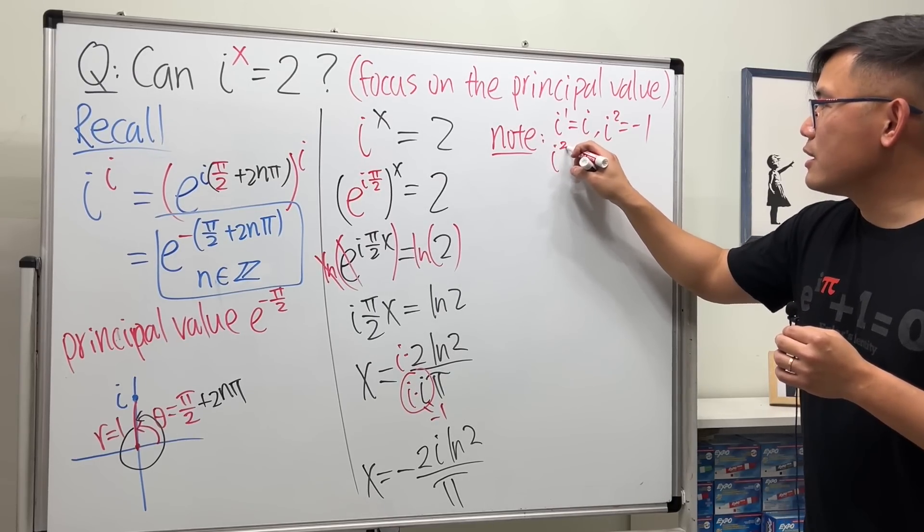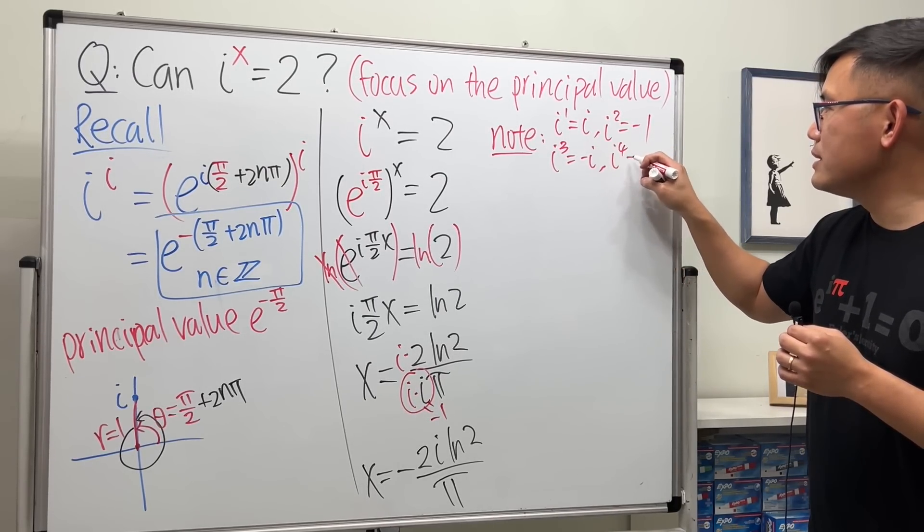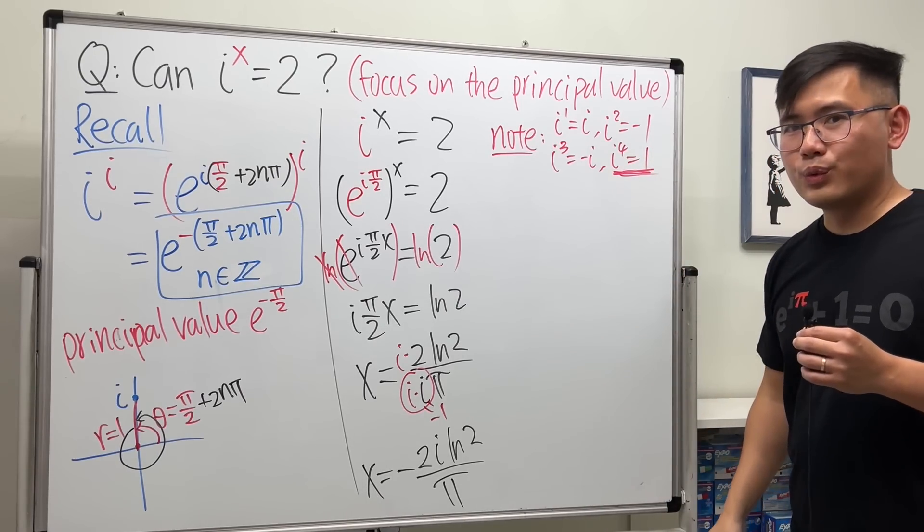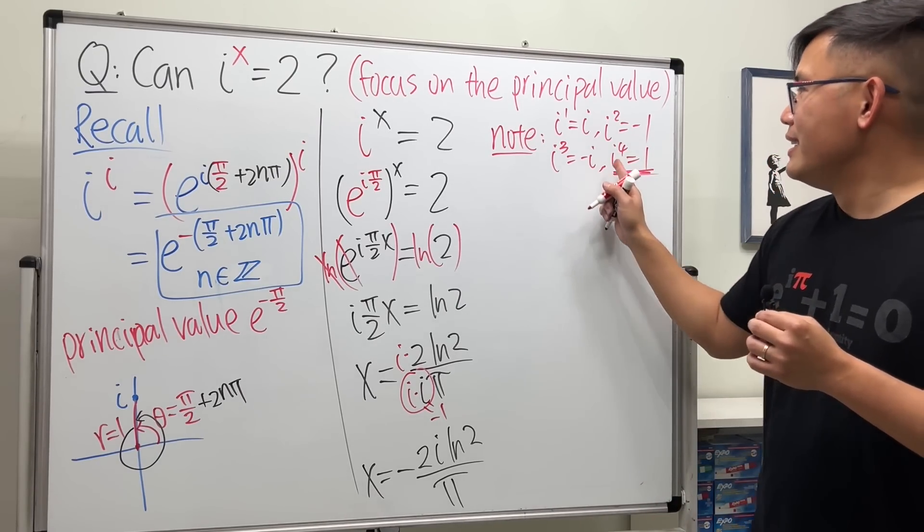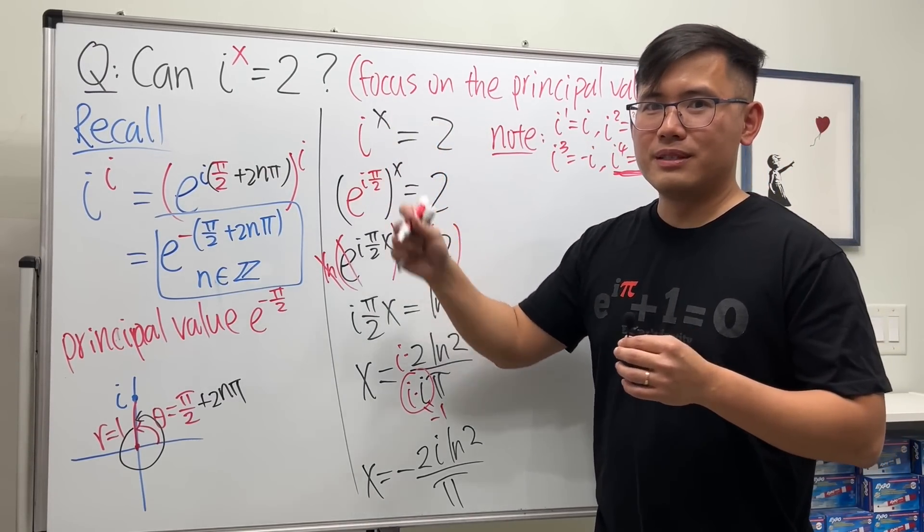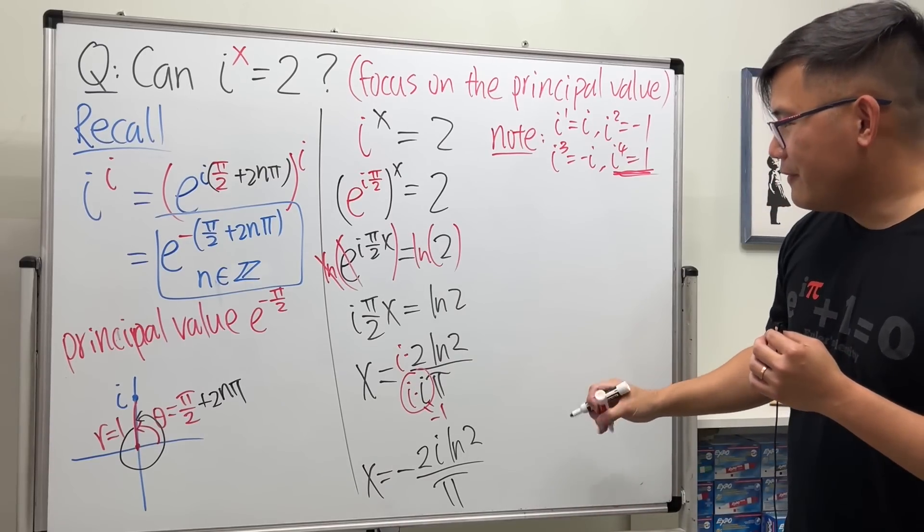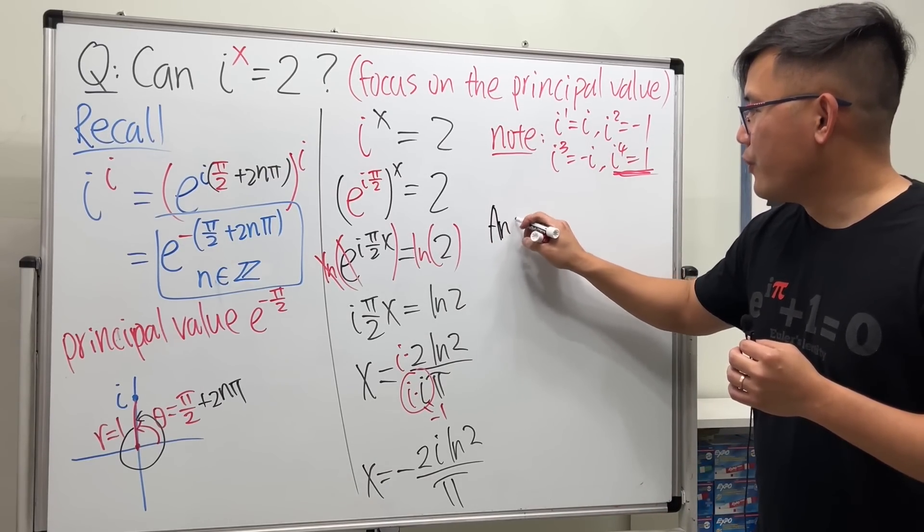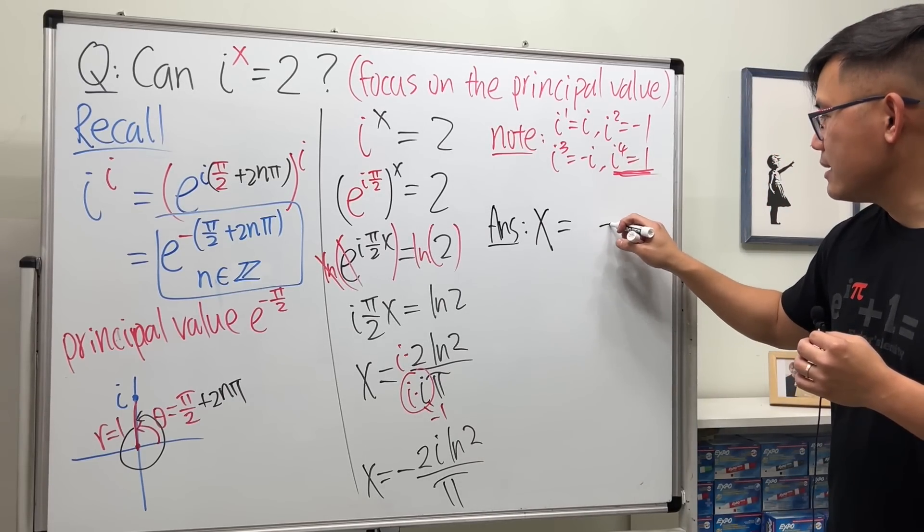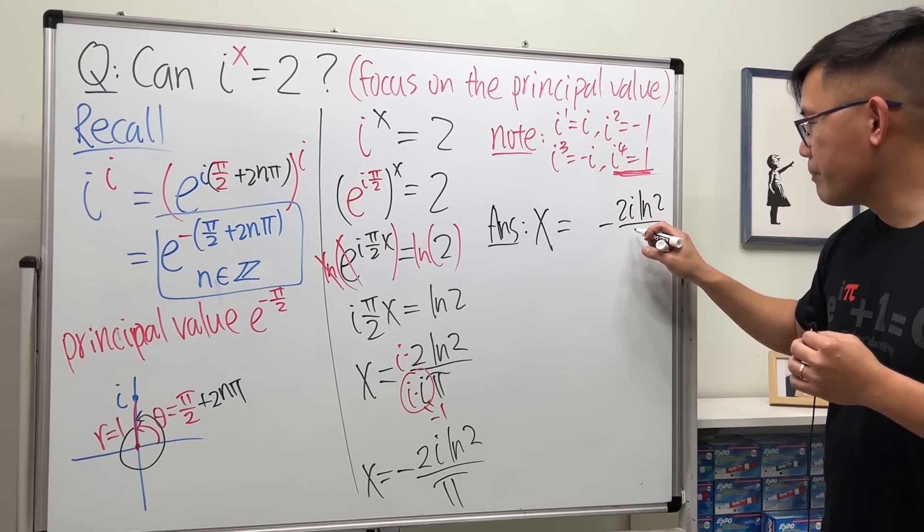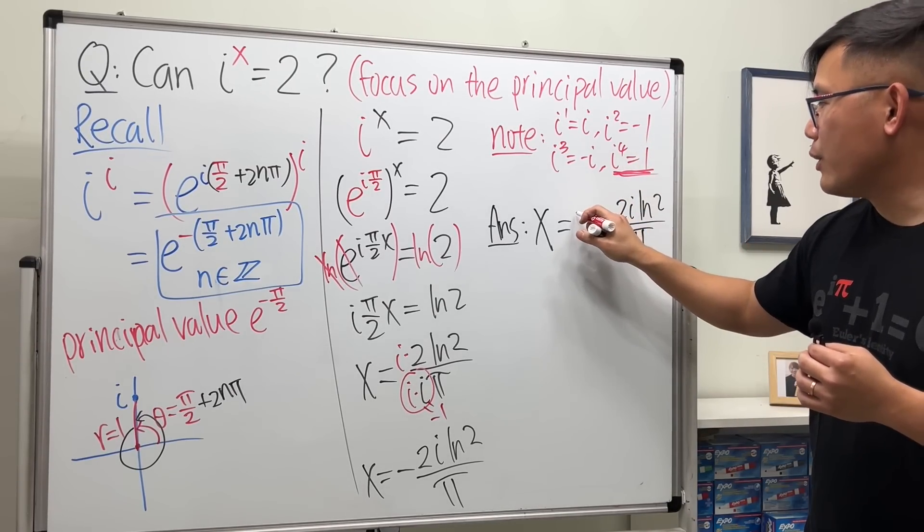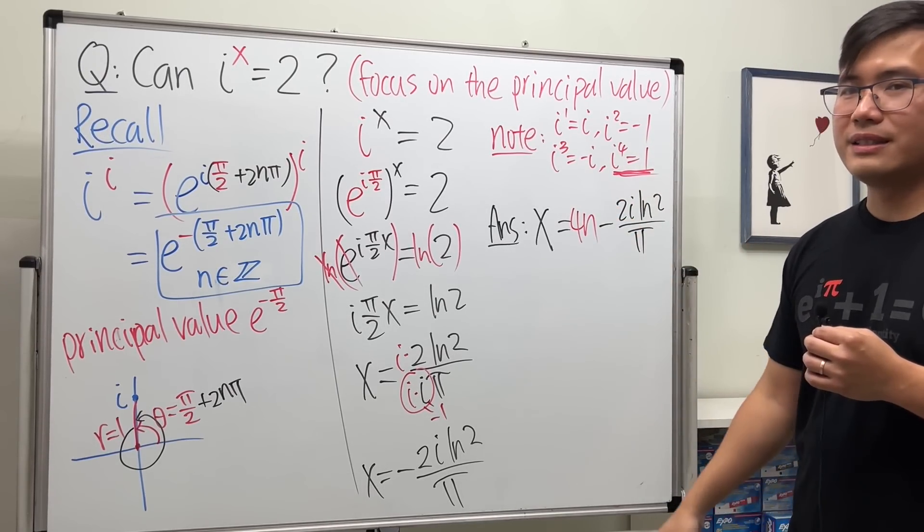Notice we know that i to the first equals i, i squared by definition is negative one, i to the third power equals negative i, i to the fourth power equals one, and it repeats. So imagine if we have multiples of four, that should also contribute to the x because that will just give us one anyway. In fact, the answer for this question is x equals 4n minus 2i ln 2 over π. We will also need the multiples of four.